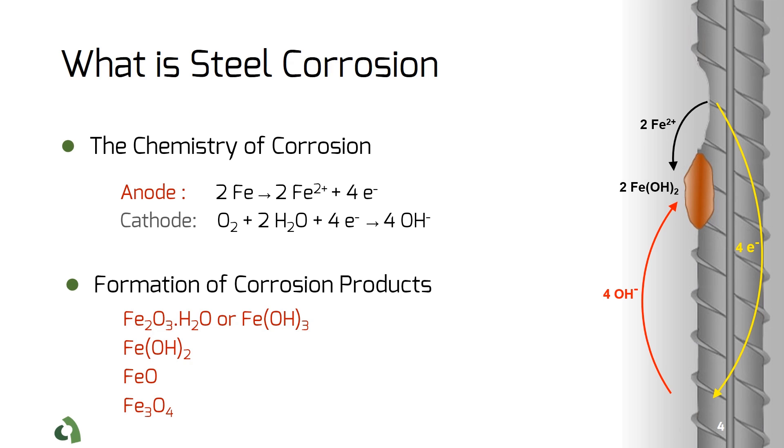The volume of corrosion products, especially Fe2O3, is significantly higher than the original steel. This will increase the internal pressure and consequently crack the concrete.